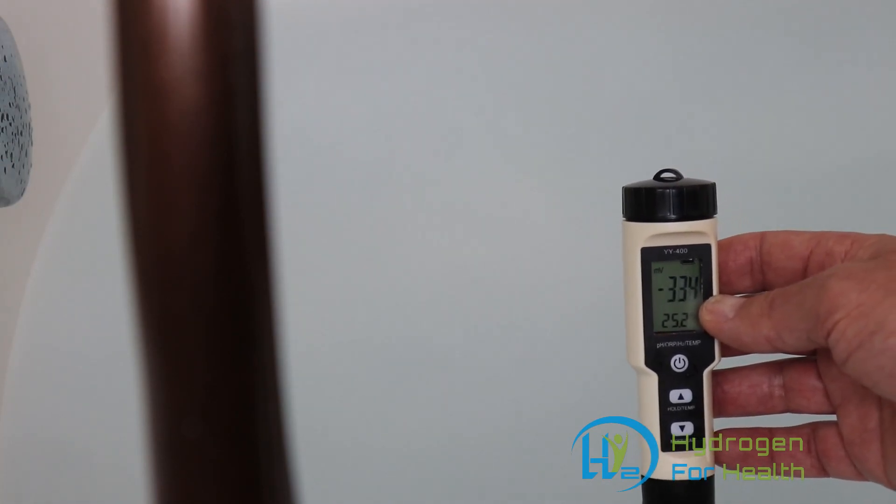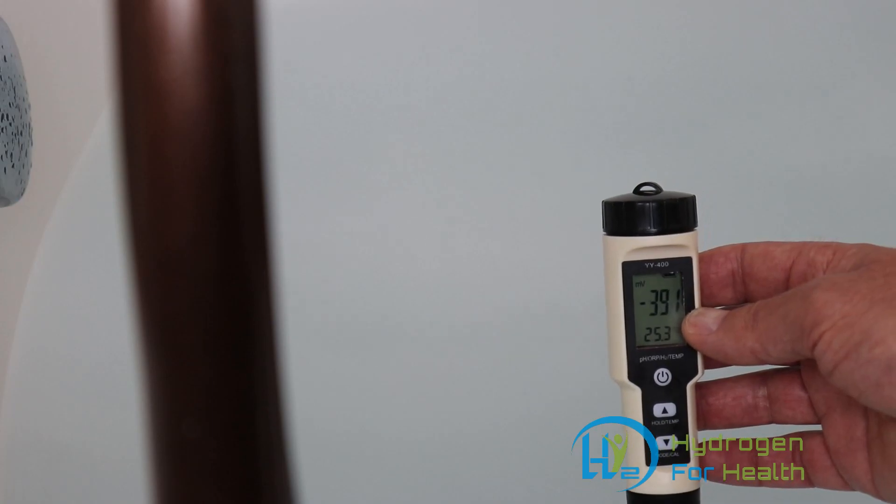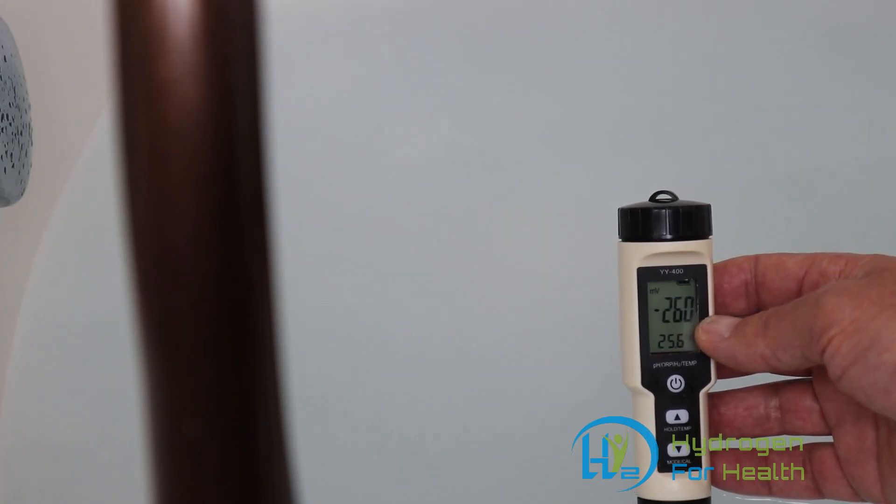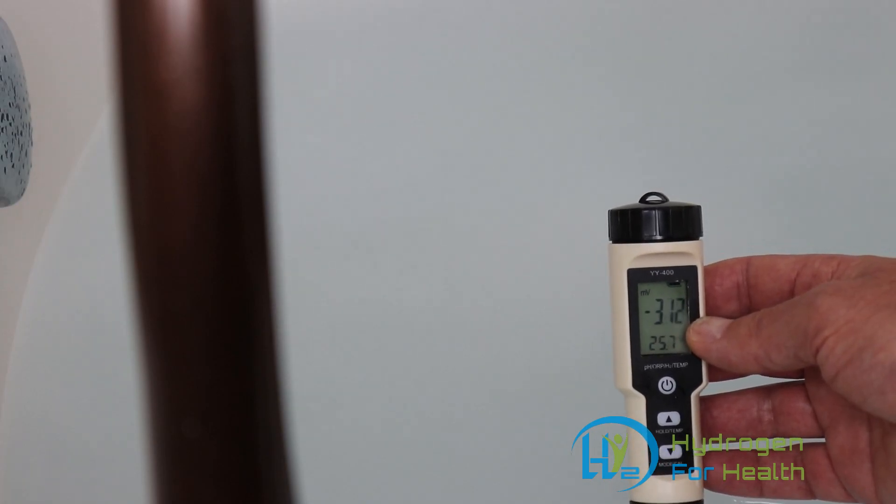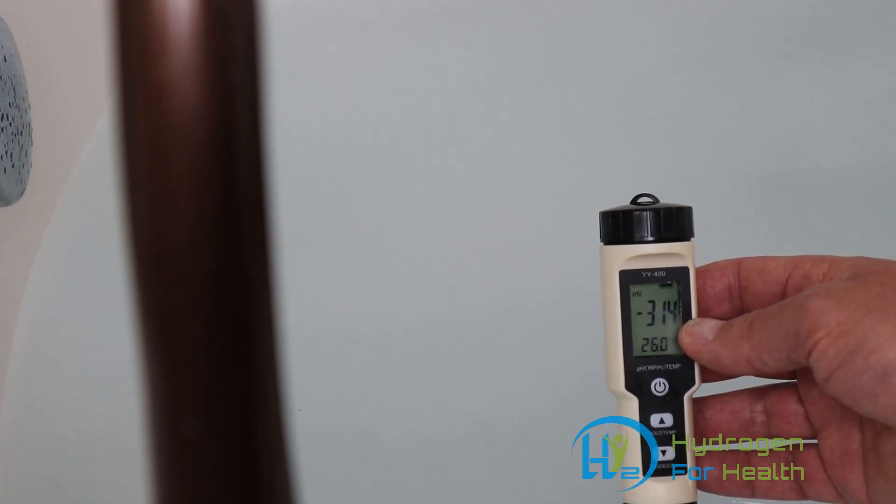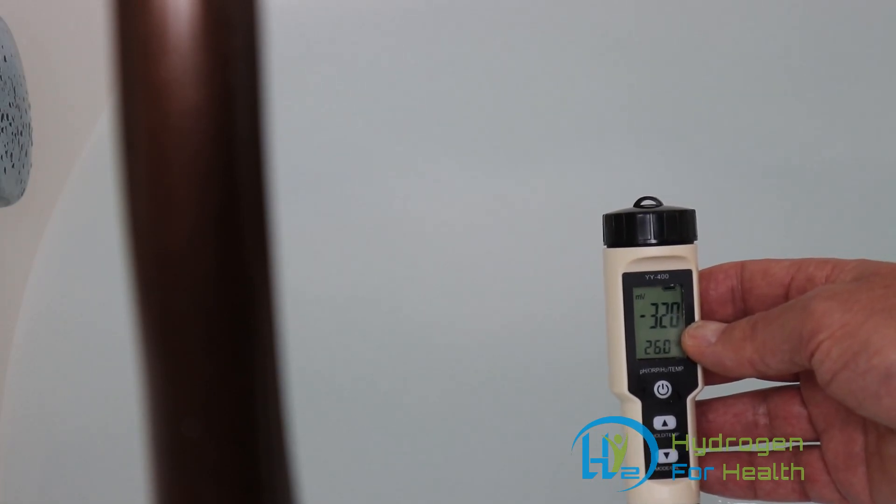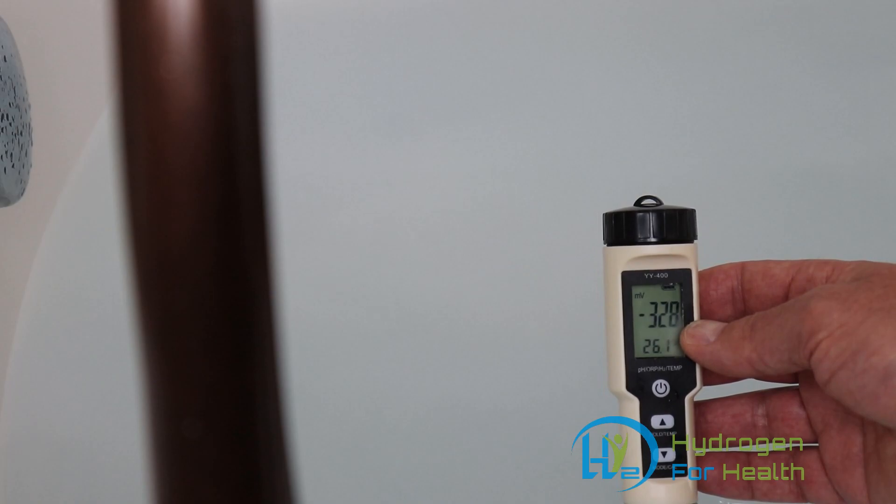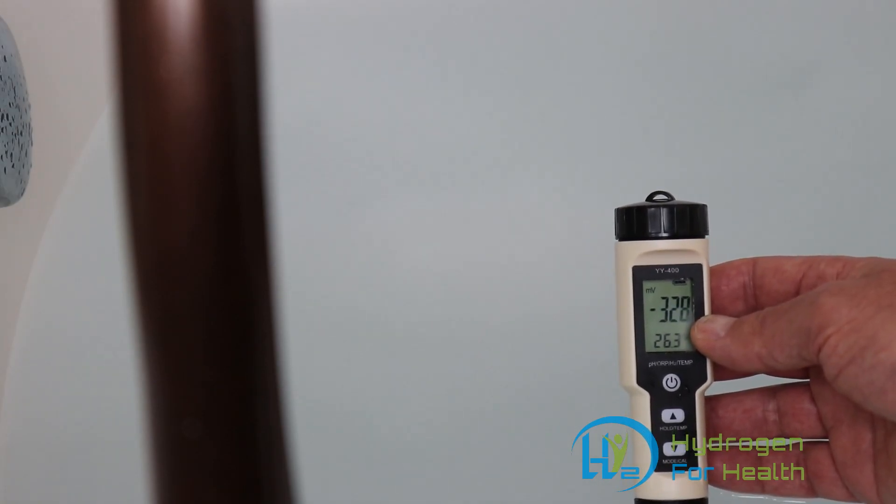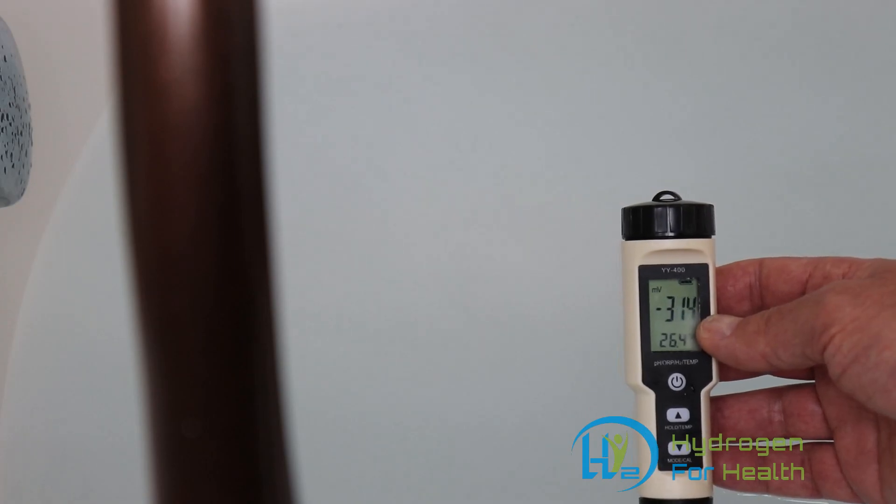Okay so right now I have a meter in here that measures ORP. An ORP doesn't really measure the amount of hydrogen in the water but it does show that a negative number shows the presence of hydrogen in the water. And you can see right now it's hovering around a little over negative 300.